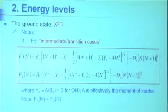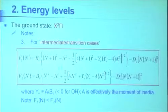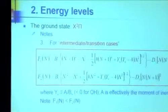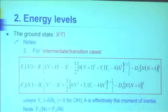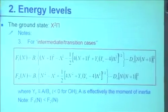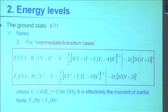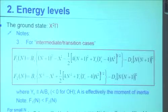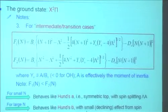Now the equations look more complicated because they've been built for this intermediate case. F₁(N) and F₂(N): the B values and the rotational quantum number N you understand. Lambda is the value of lambda. Everything looks good until you get to Y. Y is the shorthand notation for A over B — where B is related to moment of inertia and A is the spin-orbit coupling. Numerically the absolute magnitude is about the same, but A is a negative number — so Y is negative. For small N it behaves like Hund's case A; for large N it behaves like Hund's case B.